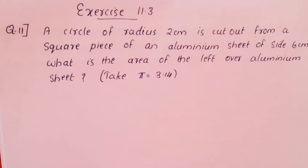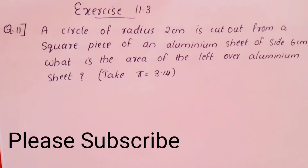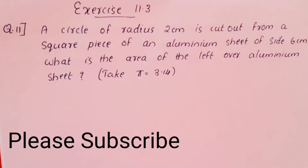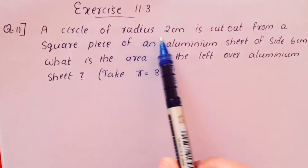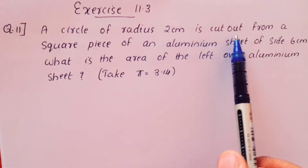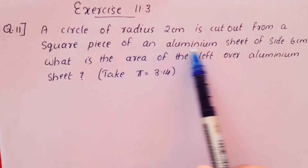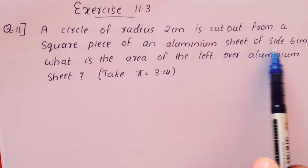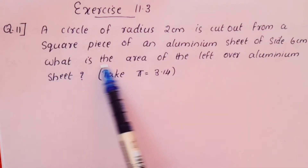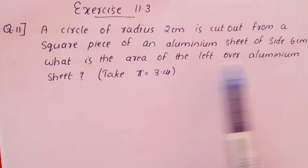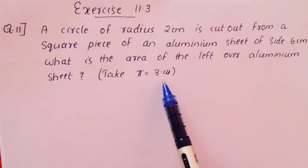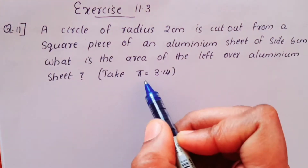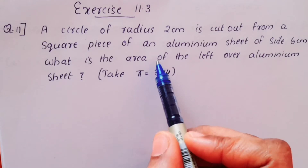Exercise 11.3, question 11. A circle of radius 2 cm is cut out from a square piece of an aluminium sheet of side 6 cm. What is the area of the leftover aluminium sheet? Take π equal to 3.14.